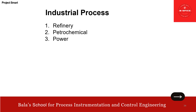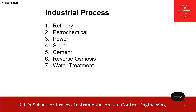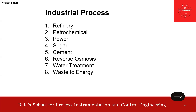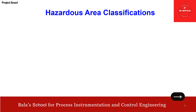Industrial processes — I want to touch upon and give you an outline on refinery, petrochemical, power, sugar, cement, reverse osmosis, water treatment, and waste to energy. All these processes I am going to provide. And hazardous area classification — we have already done a very detailed video on this: overview and applications are covered. You can watch and get benefited.